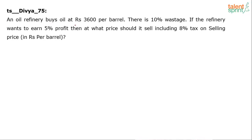An oil refinery buys oil at rupees 3600 per barrel. There is 10% wastage. If the refinery wants to earn 5% profit, at what price should it sell including 8% tax on the selling price, in rupees per barrel? The cost price is rupees 3600 per barrel.